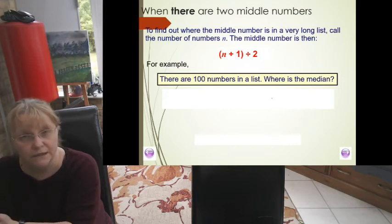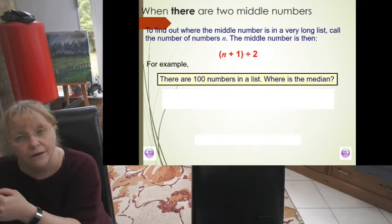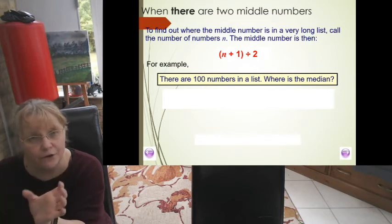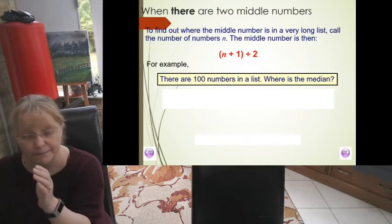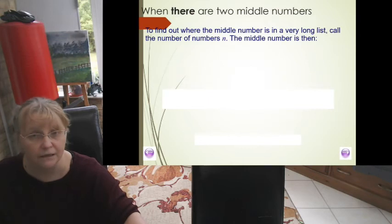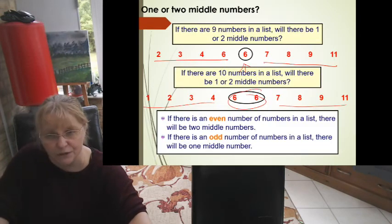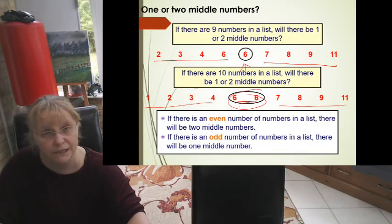So if there are 100 numbers in a list, what is the median? Now we know before that an even number set would mean that there were two numbers in the middle. So if we just go back, do you see how there were two numbers in the middle when there was an even number?